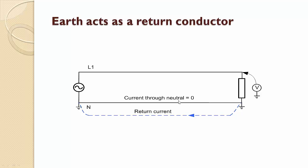So we can even make the neutral conductor smaller in size because it will not be carrying as much current as the line conductor. So this helps us in saving a little bit of cost. So the role of earth as a return conductor is apparent here.